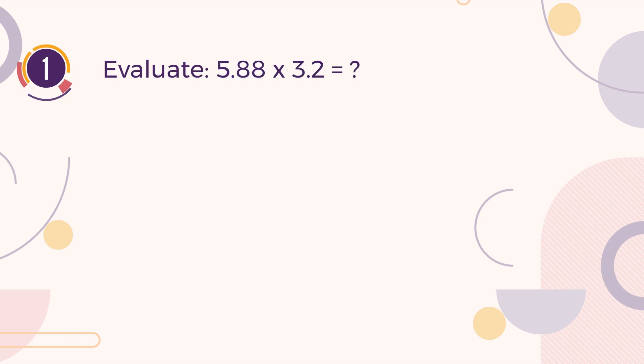Number 1. Give the correct answer of the following calculation. 5.88 multiplied by 3.2. A. 18.816. B. 116.44. C. 220.352. D. 117.